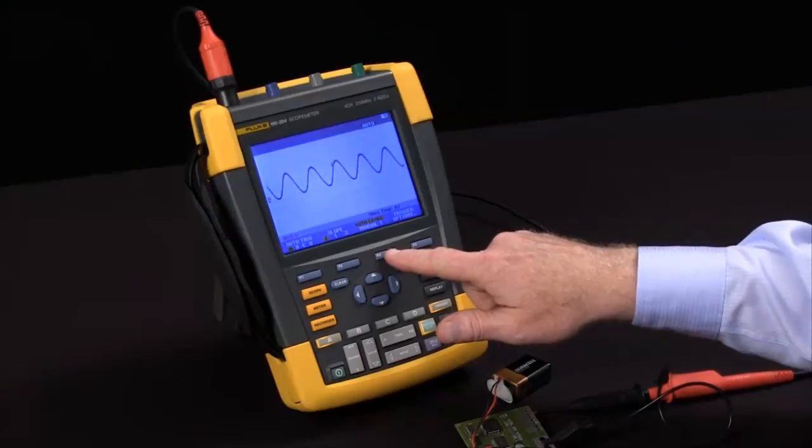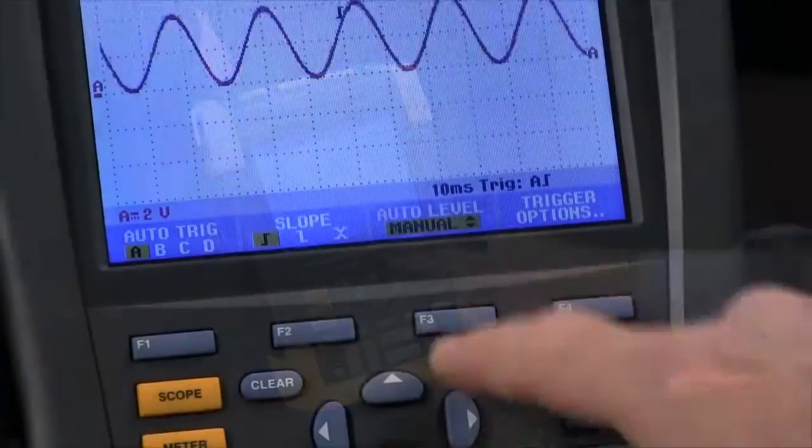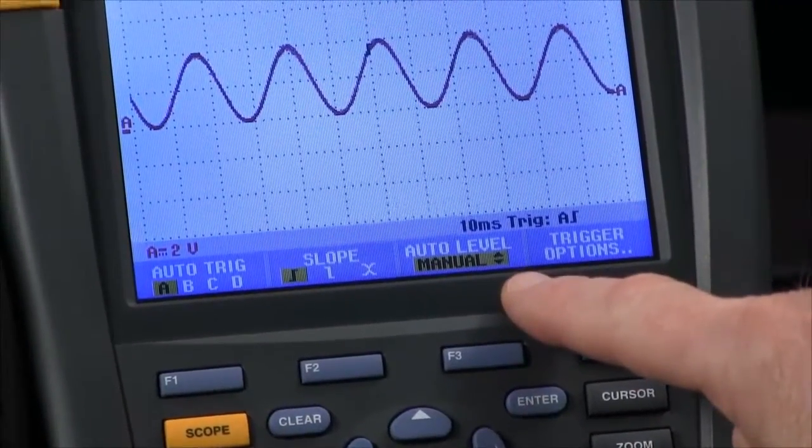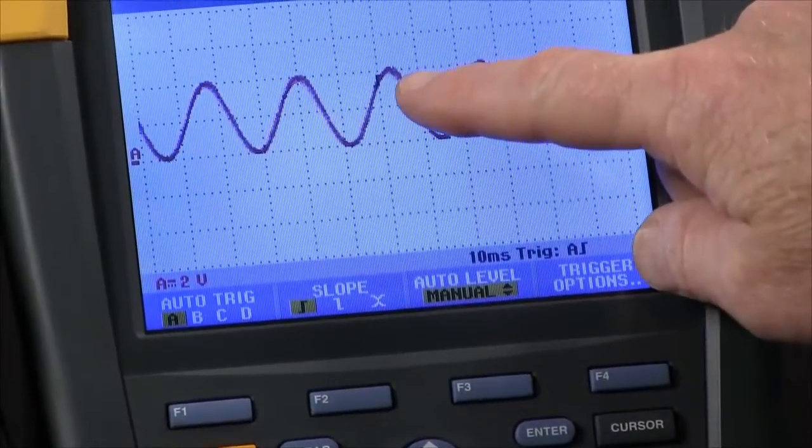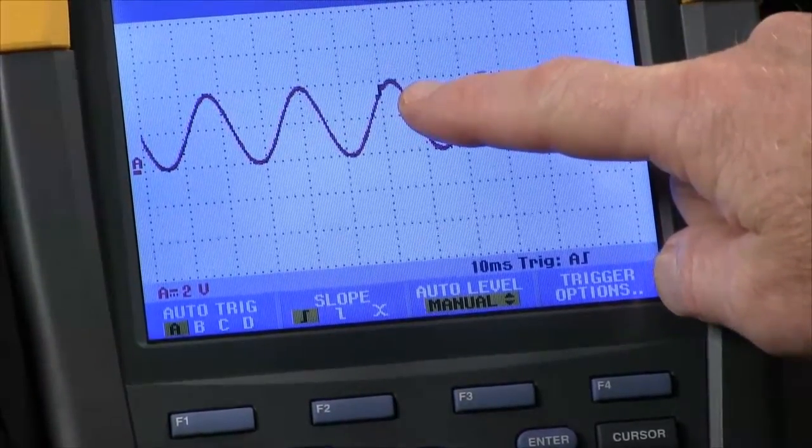If we want to adjust our level, we hit F3, and we're in manual control right now. My trigger point is a little black indicator right in the center of the screen.